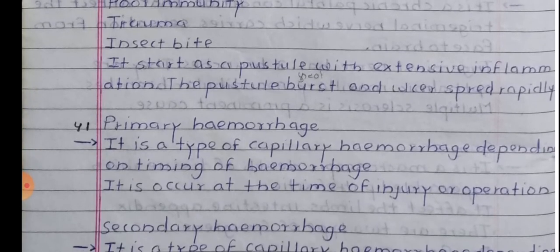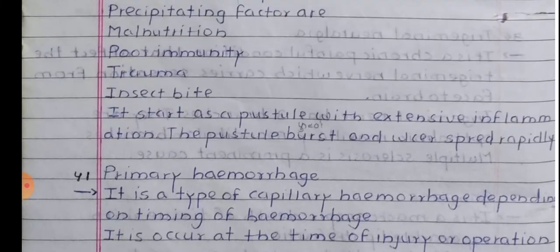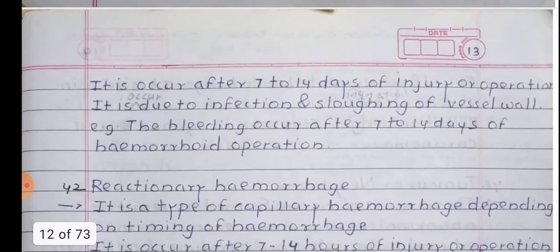Primary haemorrhage: It is a type of haemorrhage classified depending on the timing. It occurs at the time of injury or any operation. Secondary haemorrhage: It is also classified depending on the timing of haemorrhage. It occurs after 7 to 14 days of injury or operation.